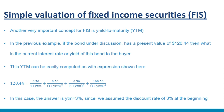Let us compute the YTM of this bond presently selling at $120.44. We write the bond price expression in YTM terms: 120.44 = 8.5/(1+YTM) + 8.5/(1+YTM)² + 8.5/(1+YTM)³ + 108.5/(1+YTM)⁴. Since at 3 percent discount rate the PV worked out to $120.44, its YTM is 3 percent. This means if you buy this bond and hold it to maturity, you will earn 3 percent per annum. The YTM is less than the coupon of 8.5 percent because you are paying $120.44 for a bond with a face value of $100 — the bond is selling at a premium.